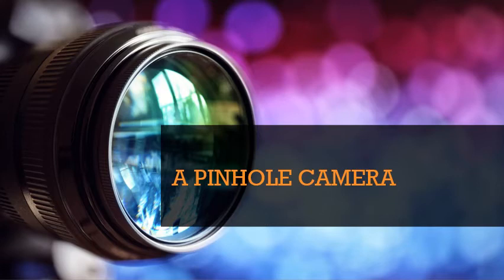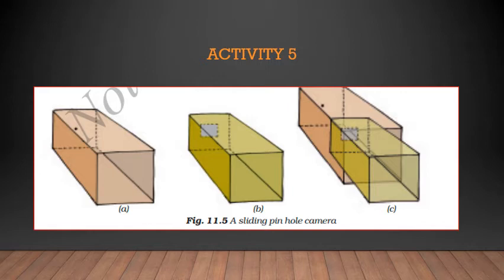Let us use this long box to prepare a simple camera — a pinhole camera. You might think that we need a lot of stuff to make a camera, but not really, if we just wish to make a simple pinhole camera. That brings us to activity 5. Take two boxes of cardboard such that one can slide into another with no gaps in between them. Cut open one side of each box. On the opposite face of the larger box, make a small hole in the middle, like shown in picture A in your textbook and on your screen.